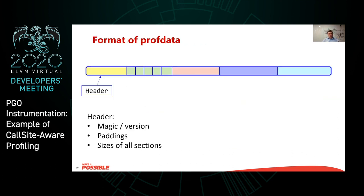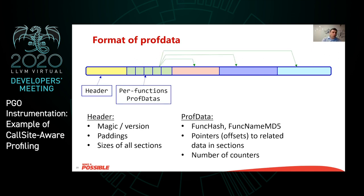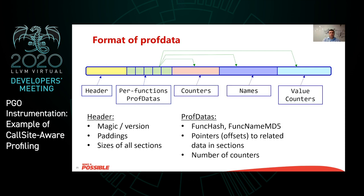That's how instrumentation works for different cases. Now let's take a look at the format that the profiling runtime uses to store information on disk. First there is a header of the file. Then we store per-function profiling data. Those per-function profiling data entries will have references to counters, different names, and value counters, along with parameters like number of counters defined in the overall information part.